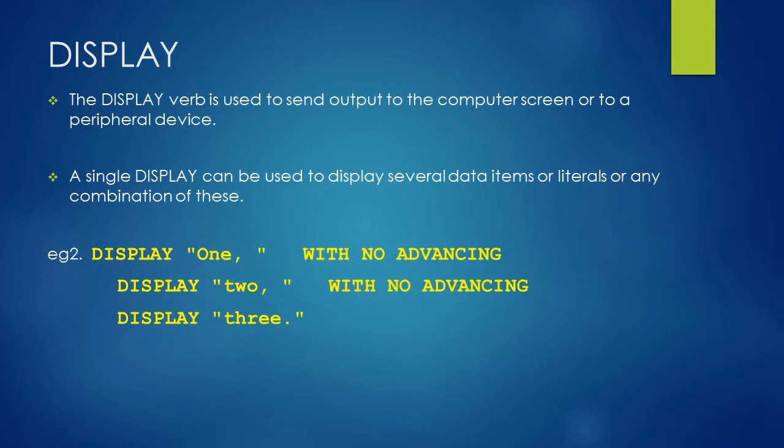In example two, we have coded DISPLAY with a literal value 'one,' with a space. After the literal value, we have used WITH NO ADVANCING clause. Using this clause, we will tell the cursor to stay in its position. After that, we have used a second DISPLAY statement using a literal value 'two,' with a space. Again, we have used WITH NO ADVANCING clause.